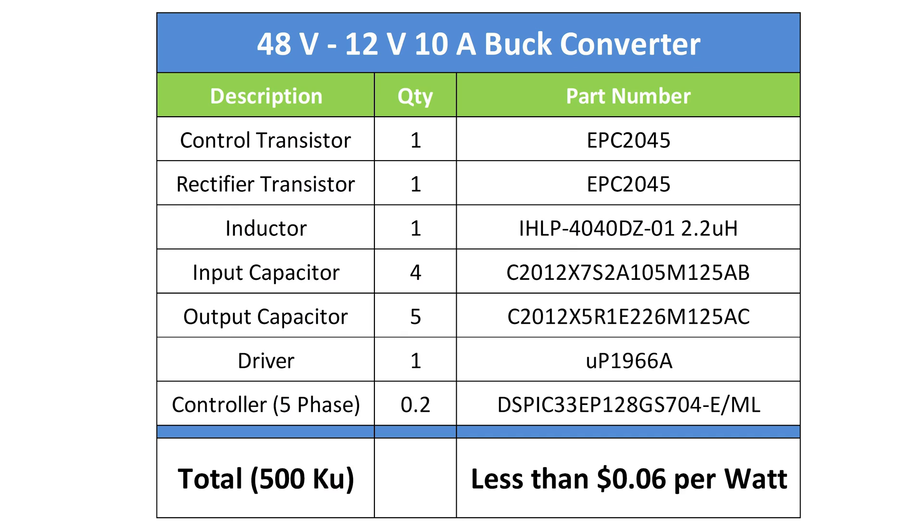For the EPC-9130, a 4-layer, 2-ounce copper board is used. Here's the bill of materials showing that this performance can be achieved for less than 6 cents per watt.